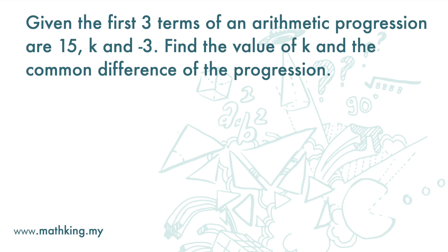To find k, we need to remember that the difference between 15 and k and the difference between k and negative 3 are the same. So, 15 minus k must equal k minus negative 3. We solve this equation and we can find the value of k.